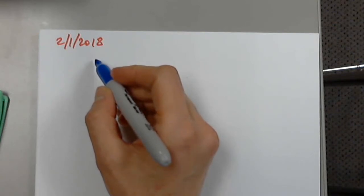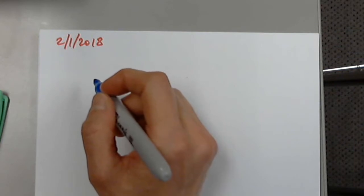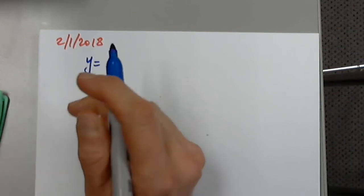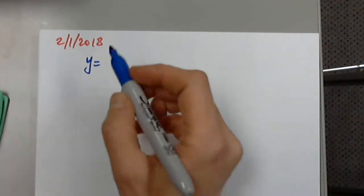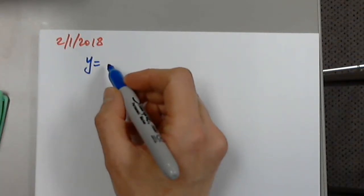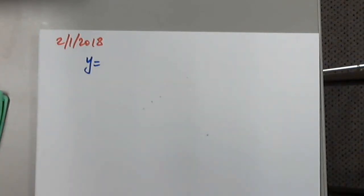A student asks about a graph problem where the x-values are given and you want the object numbers. The function or expression is p plus x over 2 plus 33, and you have to plug in. So p plus x over 2 equals 33.